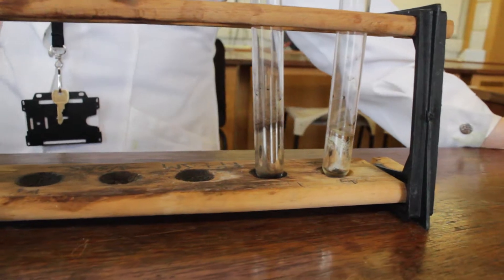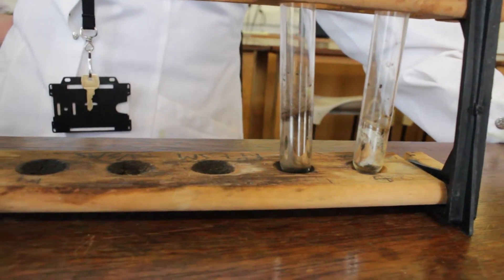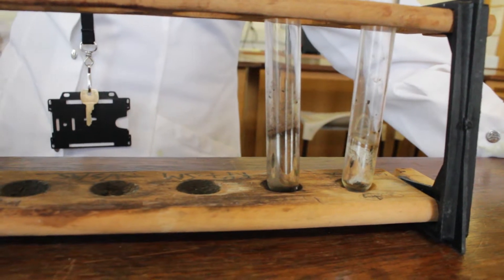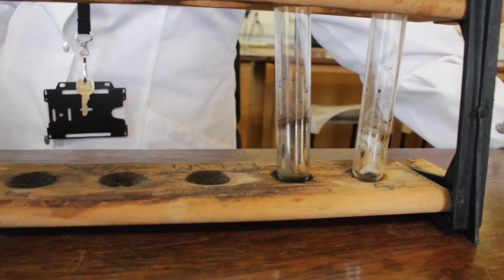The test we're doing today is the silver mirror test. It's a test that's used to distinguish between the two carbonyl compounds, either an aldehyde or a ketone.